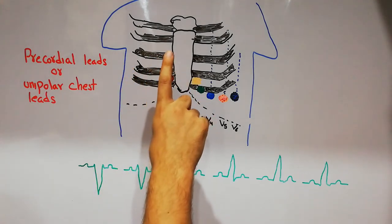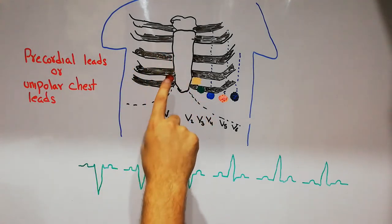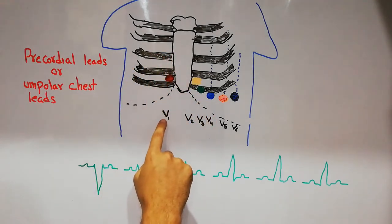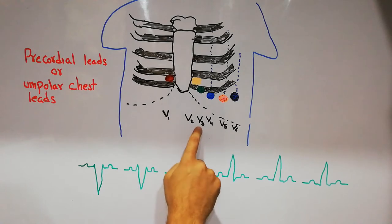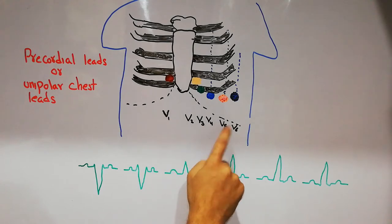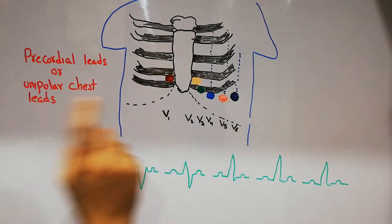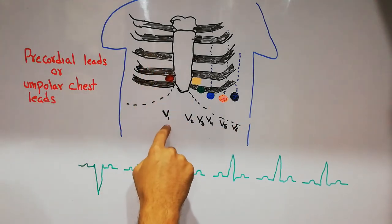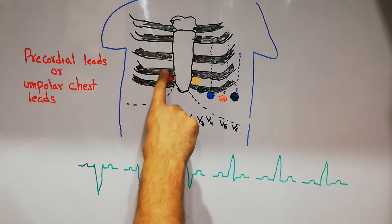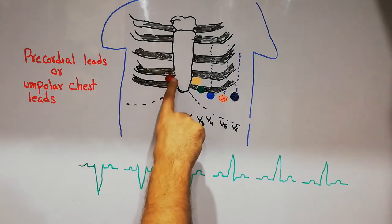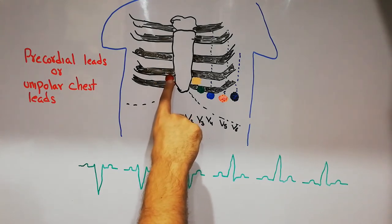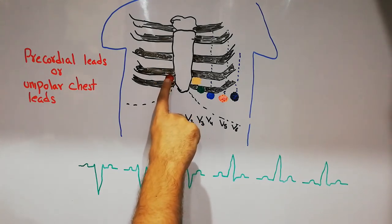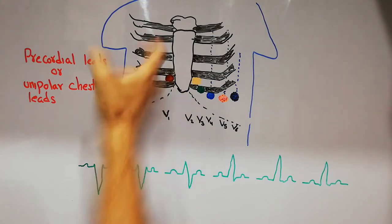The chest leads are V1, V2, V3, V4, V5, and V6. The V1 chest lead is placed on the right side of the sternum in the fourth intercostal space.